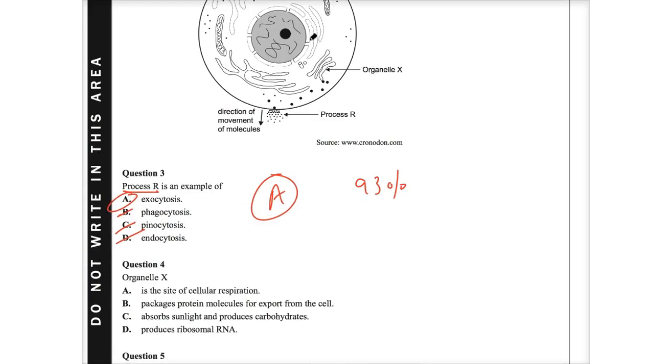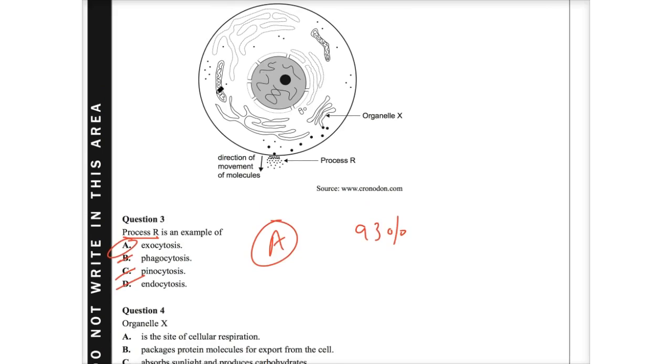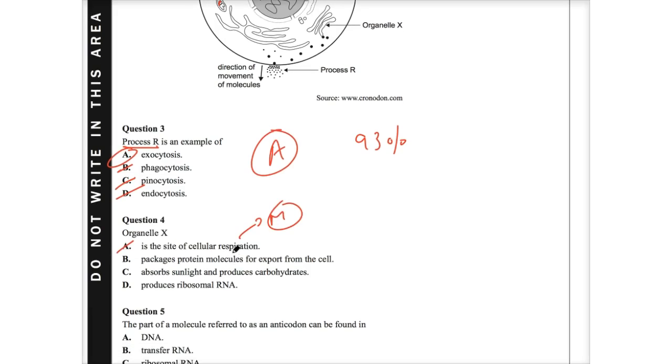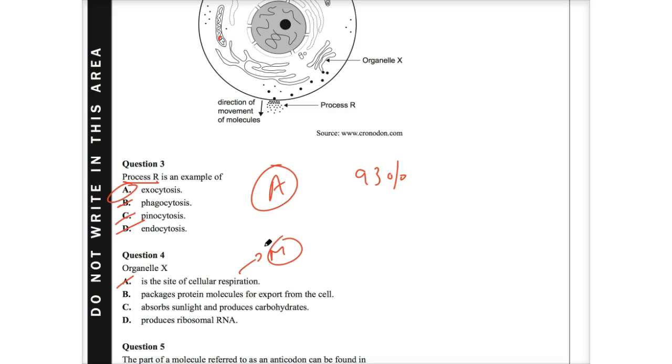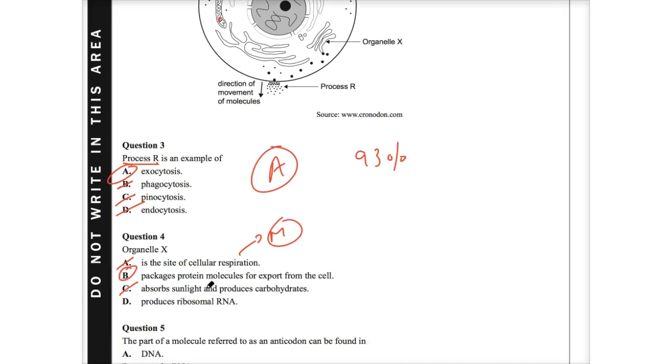Now, question four, organelle X. I look at organelle X, and I can clearly see that that's going to be the endoplasmic reticulum. It looks like ribosomes are attached to it. So it's going to be the rough endoplasmic reticulum. That's the mitochondria here. That'd be the smooth endoplasmic reticulum. So if I'm looking at the rough endoplasmic reticulum, organelle X, what is it? Is the site of cellular respiration. We know that's incorrect because that would be to do with mitochondria. B packages protein molecules for export from the cell. Well, we actually know that's a function of the endoplasmic reticulum because it forms those vesicles. So I'm thinking B would be correct. Absorbs sunlight and produces carbohydrate. Well, C we know is only to do with plant cells, but it's actually got nothing to do with the endoplasmic reticulum. This is when we're looking at chloroplasts and D produces ribosomal RNA. Well, ribosomal RNA is actually a part of the ribosome itself. And therefore it's actually not consistent with the rough endoplasmic reticulum. D is incorrect. There we go for B. 90% of the state got that one correct.